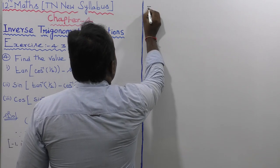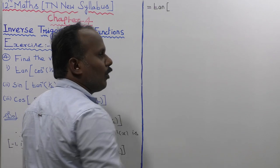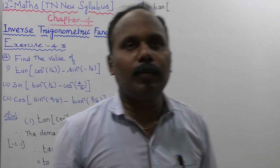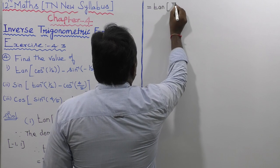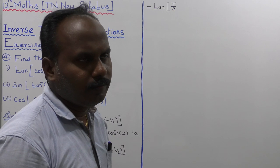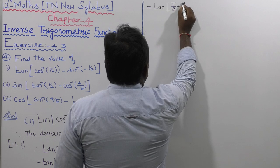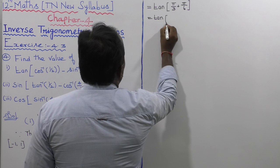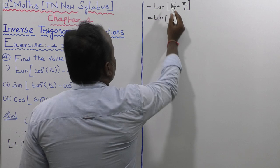That is equal to tan of cos inverse of 1 by 2. Cos inverse of 1 by 2 means 60 degrees, and 60 degrees equals pi by 3. So cos inverse of 1 by 2 equals pi by 3. Next, sin inverse of 1 by 2 equals 30 degrees, and 30 degrees equals pi by 6.